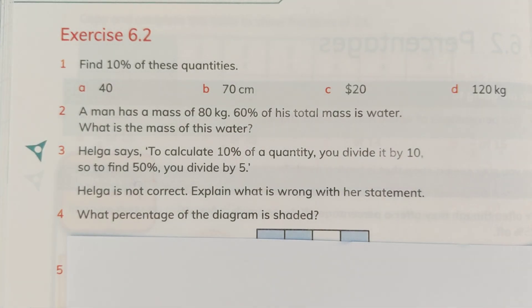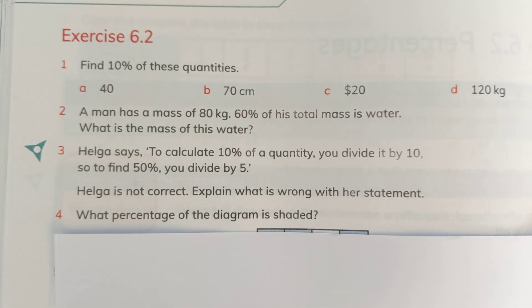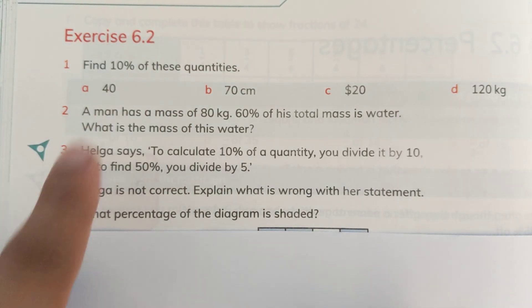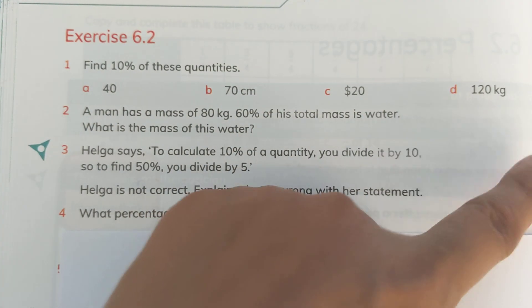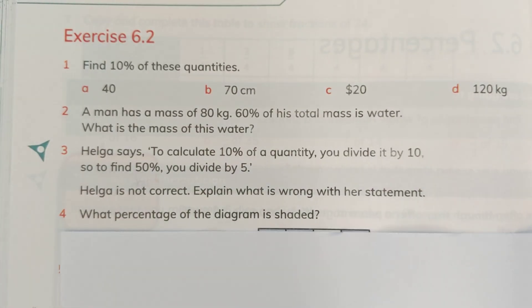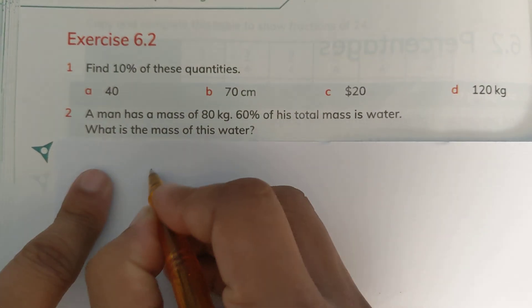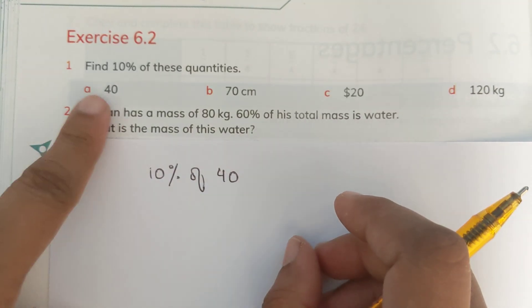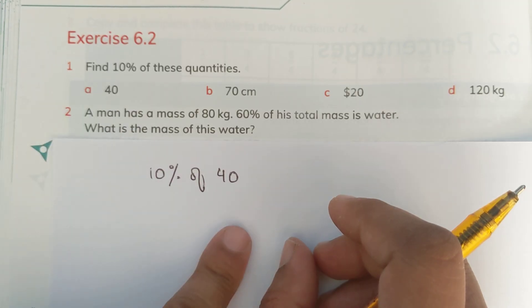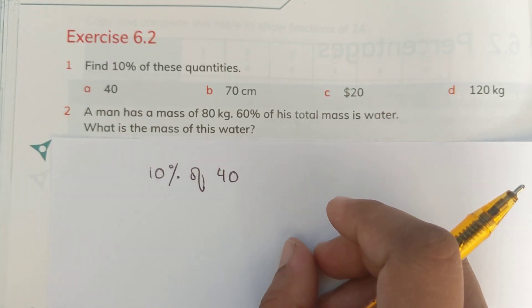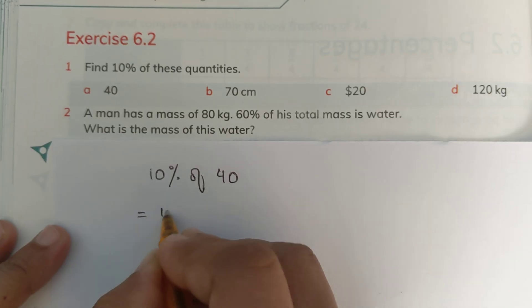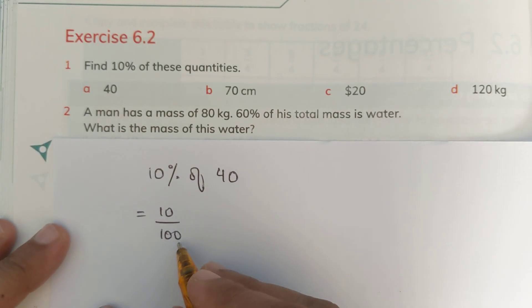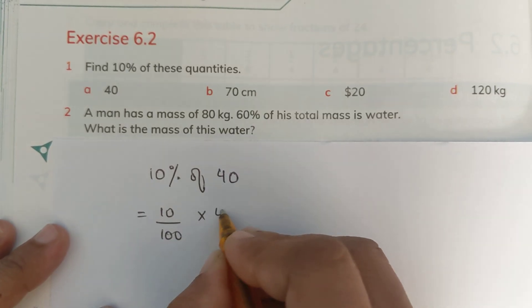So let's start with question number 1 which says find 10% of these quantities. Whenever you have to find out 10% of something, if the number has one 0 in it, you simply have to remove that 0. And I'll prove it to you. 10% of 40. 40 is a number. The 100% of a number is 40. So what would be its 10%? 10% means we have to divide it by 10. 10% means 10 upon 100 because percentage sign expresses there is an upon 100 over it.